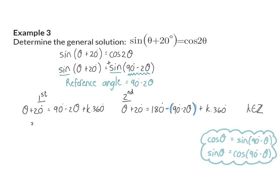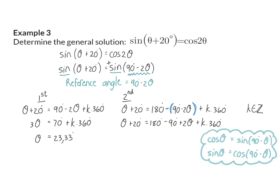In the first quadrant, moving all thetas to the left gives 3θ equal to 70 degrees plus k times 360, and dividing by 3 gives 23.33 degrees plus k times 120. In the second quadrant, first multiply in the minus to get 180 degrees minus 90 plus 2θ, then subtract 2θ on the left to get minus theta equal to 70 degrees plus k times 360, and dividing by minus one gives the final answer.